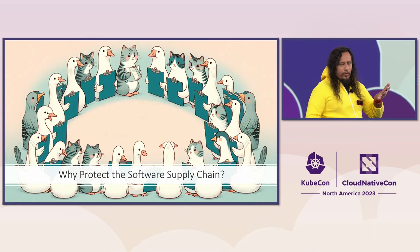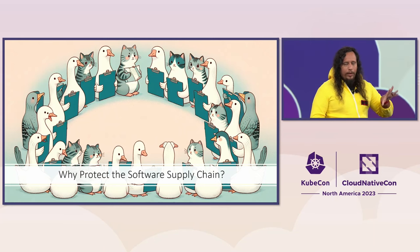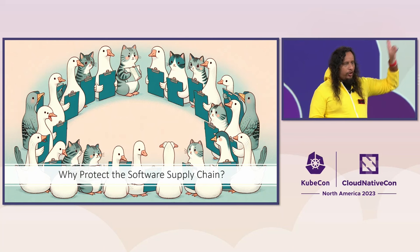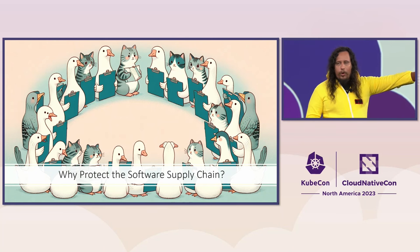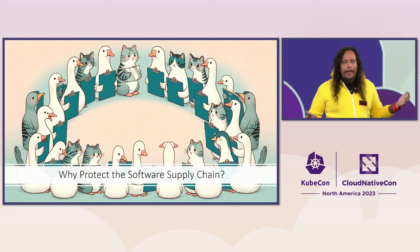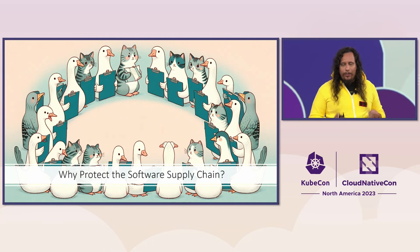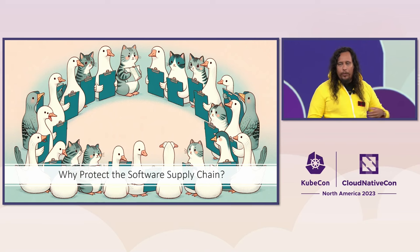So when you think of protecting the software supply chain, there are two things: keep the attackers out, but also know that developers are going to make mistakes — we're going to continue to make mistakes. How do we know when one of those occurs? How do we know where it went?